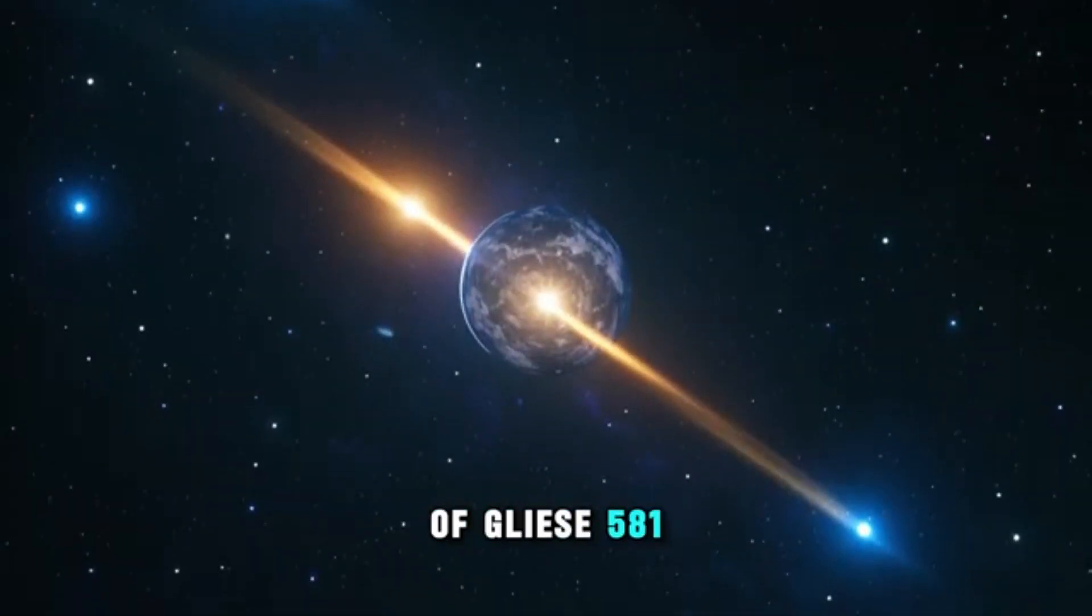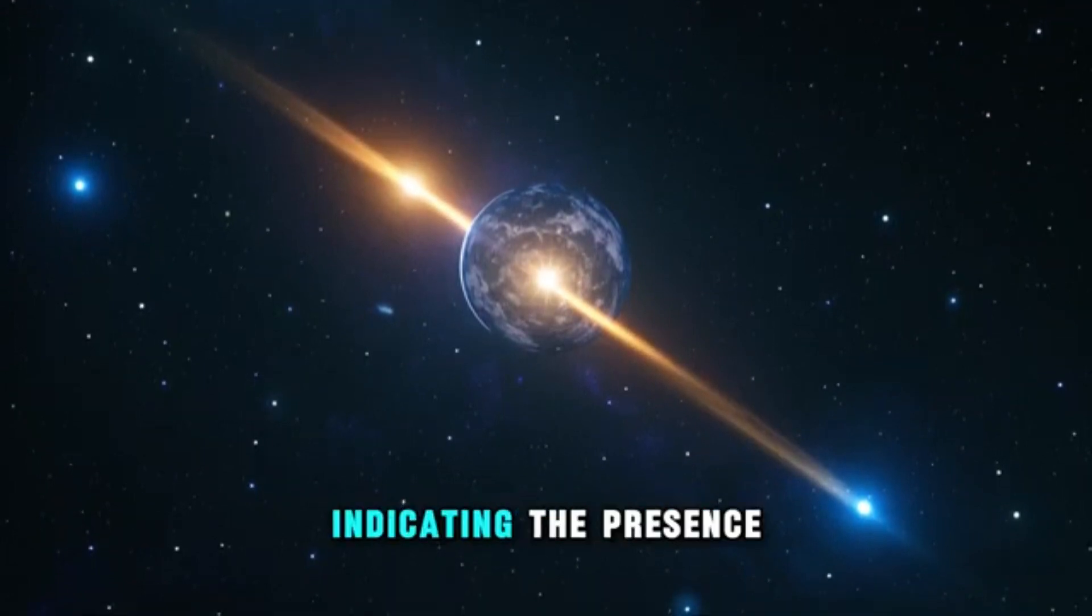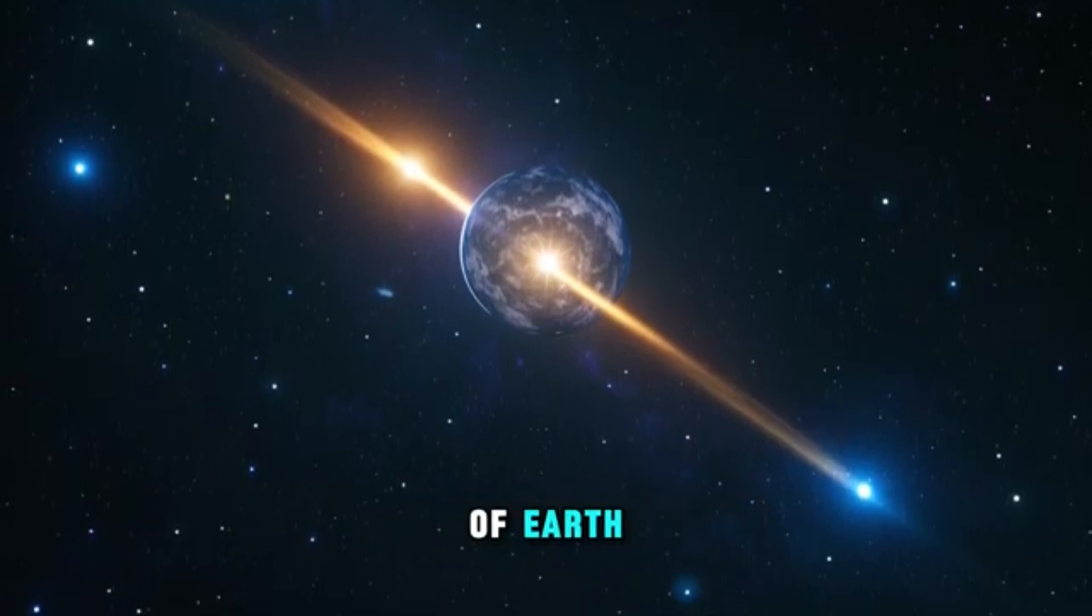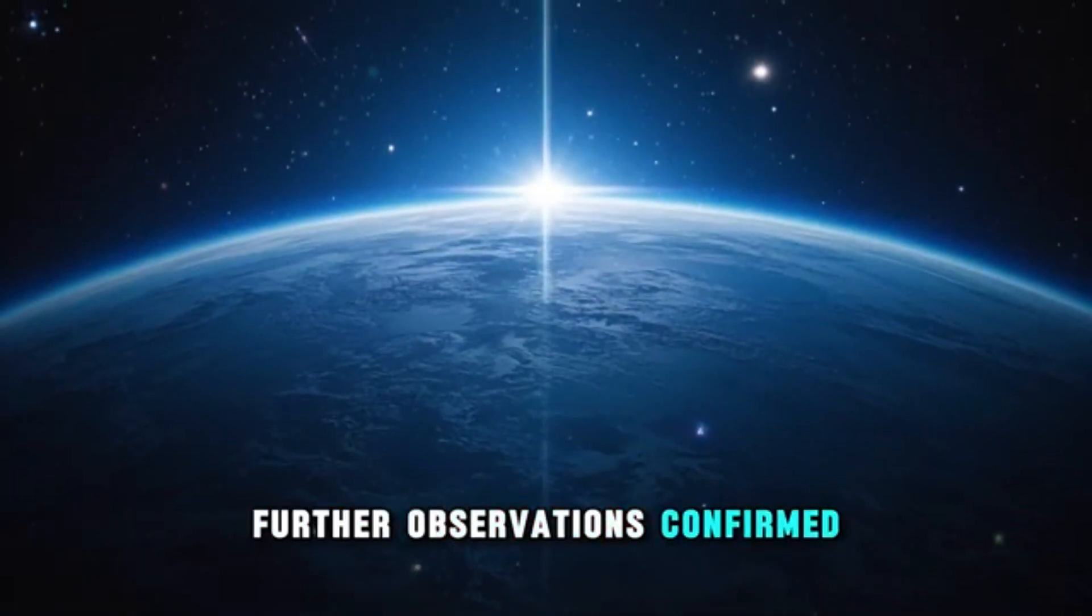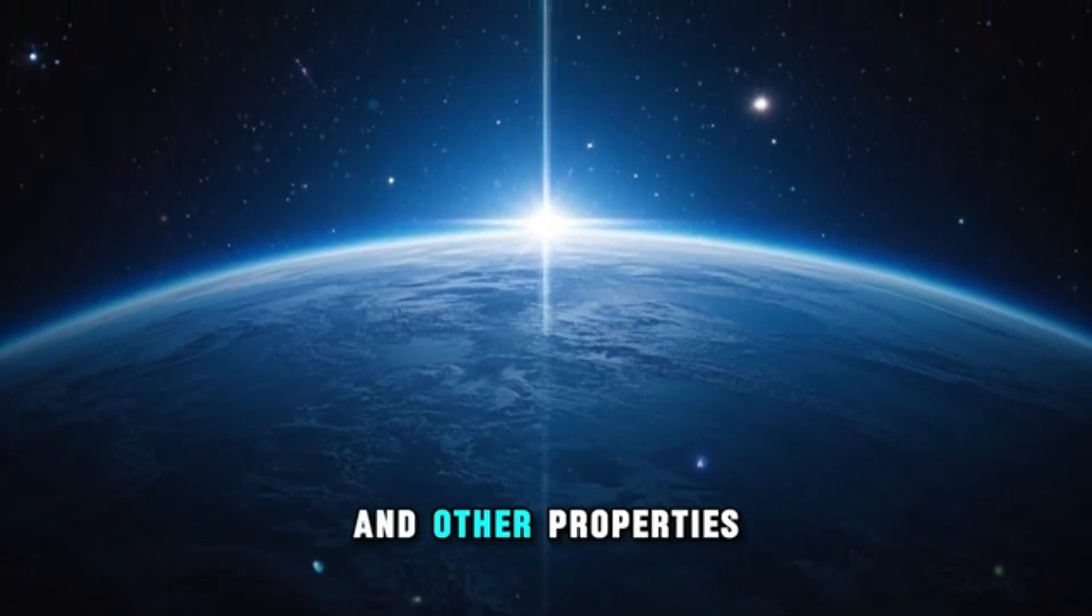In the case of Gliese 581, researchers detected a slight wobble in the star's motion, indicating the presence of a planet with a mass similar to that of Earth. Further observations confirmed the discovery and provided information about the planet's orbital period and other properties.